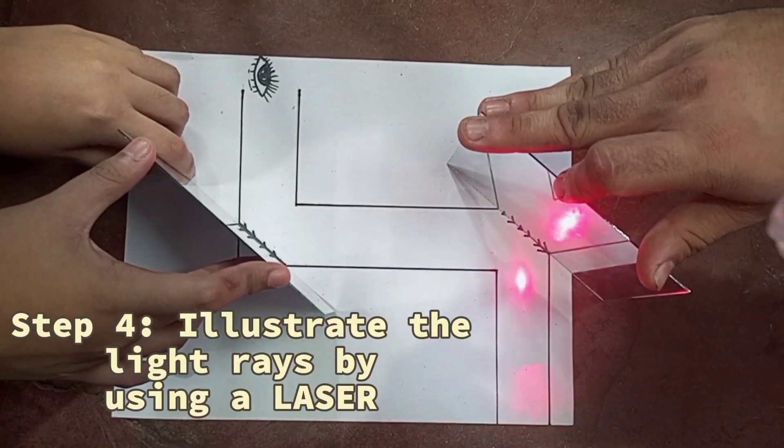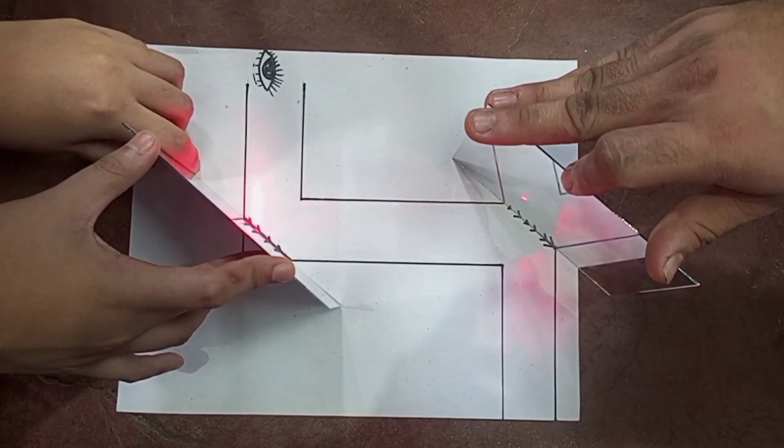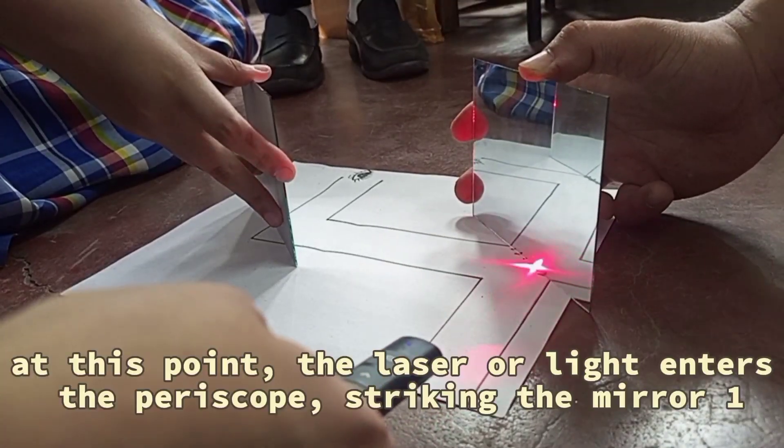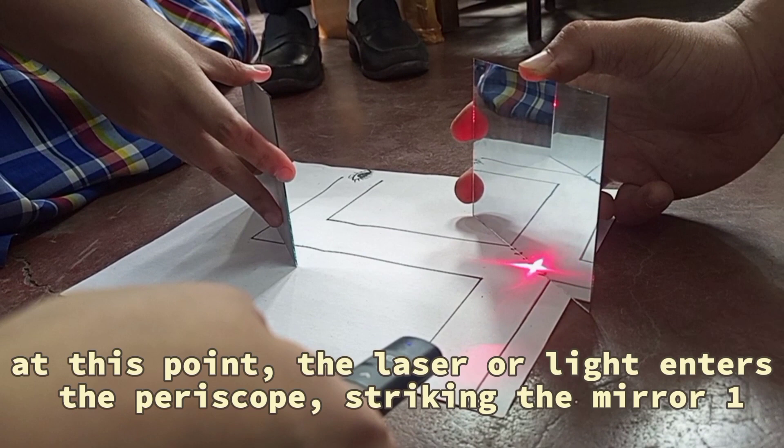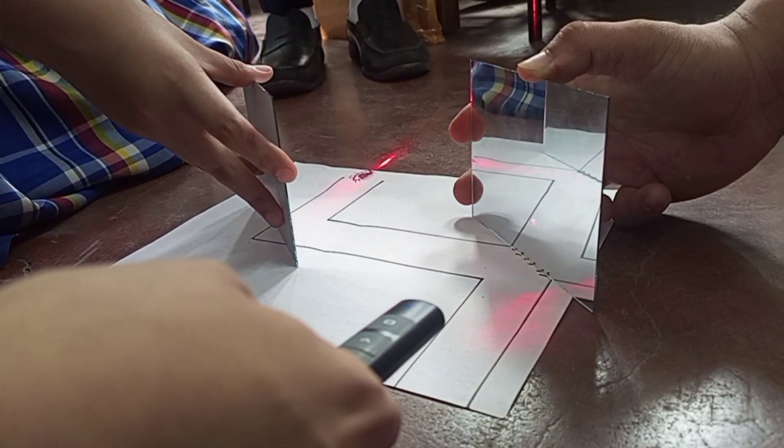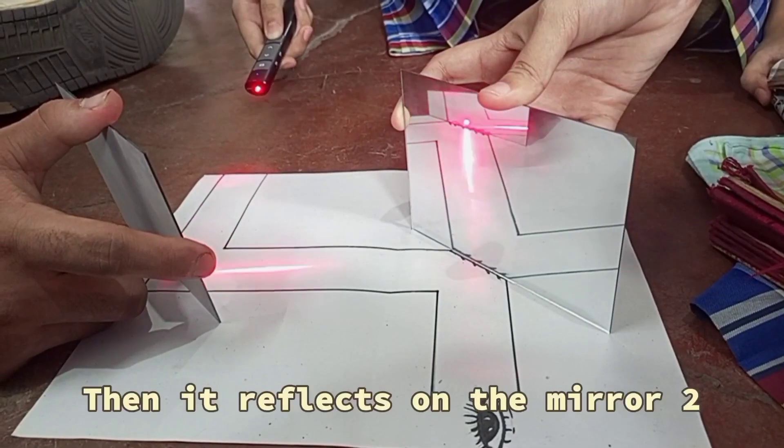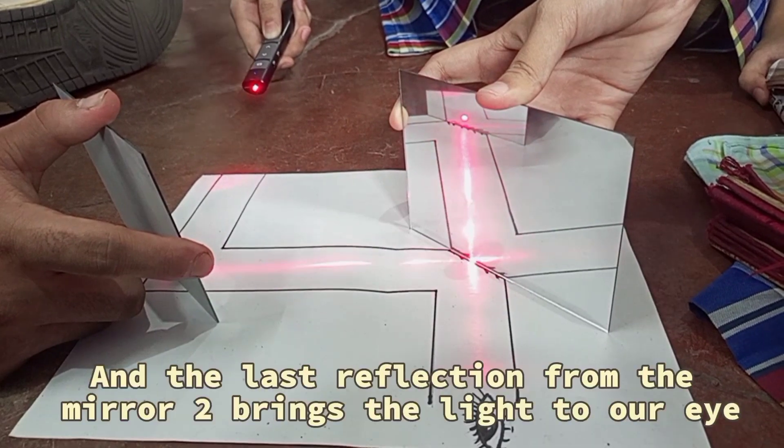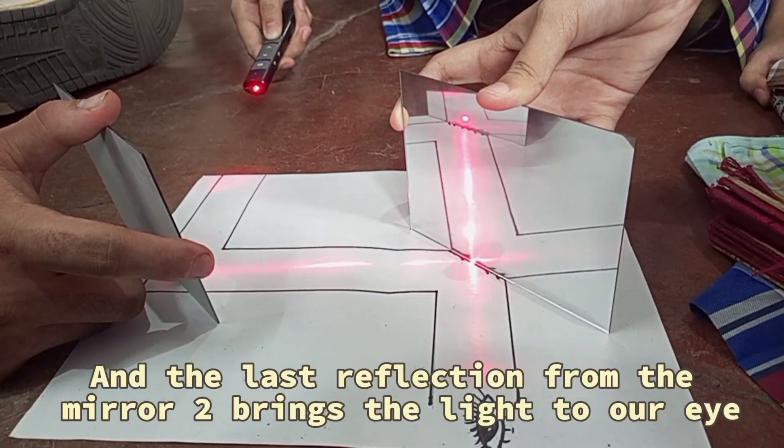And lastly, illustrate the light rays by using a laser. At this point, the laser or light enters the periscope, striking the mirror one. Then, it reflects on the mirror two. And the last reflection from the mirror two brings the light to our eye.